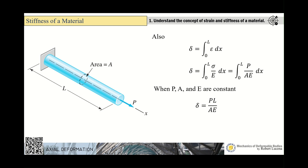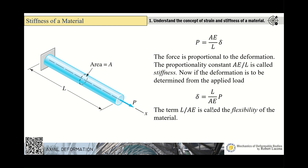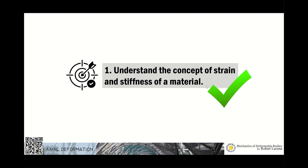To derive total deformation considering a differential segment: deformation equals ∫strain·dX from 0 to L. Replacing strain with σ/E and stress with P/A, and integrating — provided P, A, and E are constant — gives deformation = PL/AE. This confirms our first objective: understanding the concept of strain and stiffness.